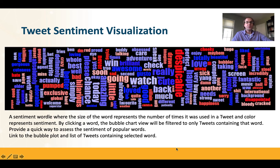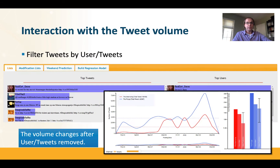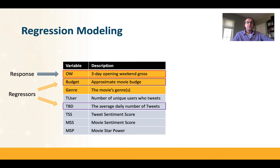We can also do a sentiment wordle where word size represents how many times that word was used in tweets, and color represents sentiment. Users could select different words and mark them as non-negative in the model — for example, correcting the movie title issue. We can also look at tweets by volume and see what users are driving the conversation: is it driven by particular users or by the movie's own advertising company?